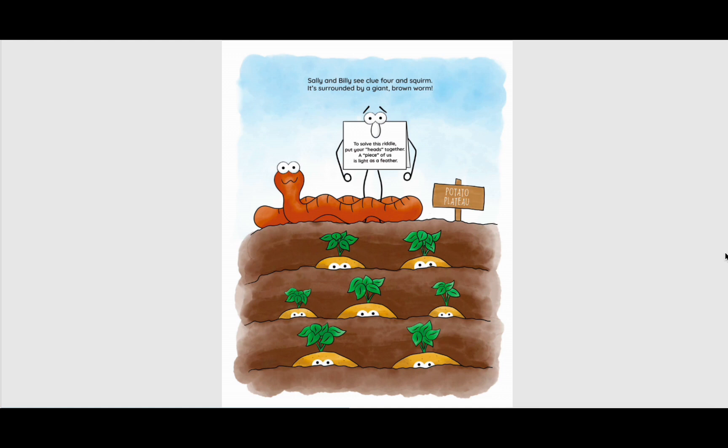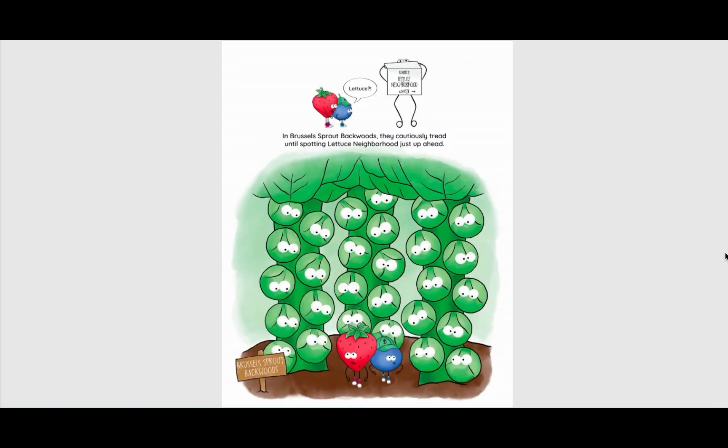Sally and Billy see clue four and squirm. It's surrounded by a giant brown worm. To solve this riddle, put your heads together. A piece of us is light as a feather. Lettuce. Correct. Lettuce neighborhood. In Brussels sprouts' backwoods, they cautiously tread until lettuce neighborhood, just up ahead.